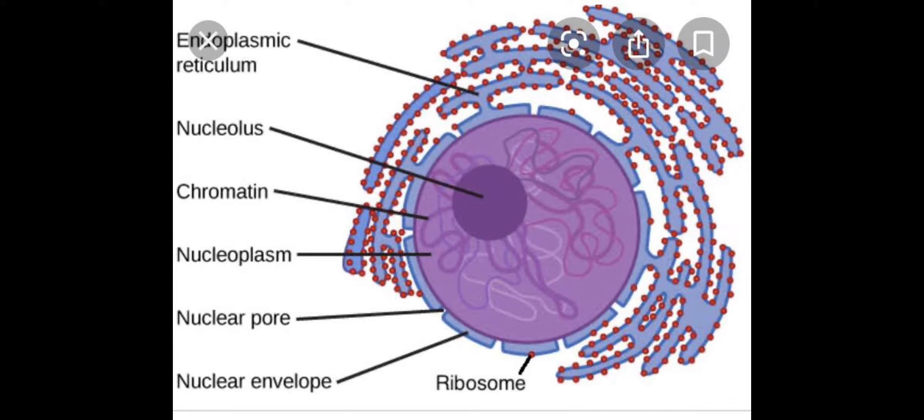Next is the nucleoplasm, which is a jelly-like fluid that is present within the nuclear membrane. And this nucleoplasm contains the thread-like material which is known as chromatin, a very densely stained body which is known as nucleolus, and RNA.